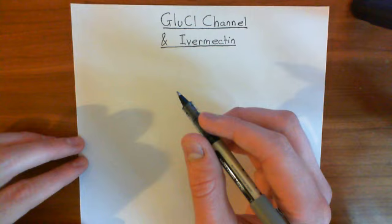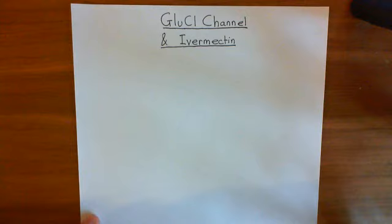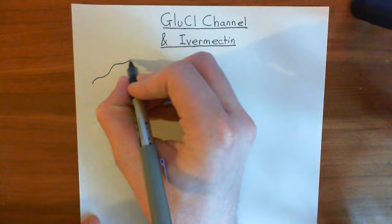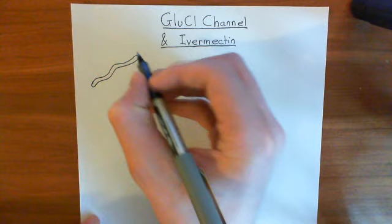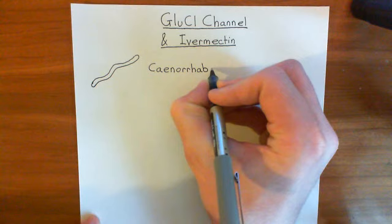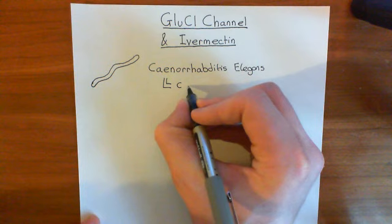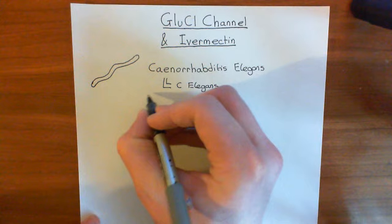The GluCL channel was initially found in a species of worm known as Caenorhabditis elegans — often abbreviated to C. elegans. These worms are a type of nematode, meaning they are a round worm as opposed to a flat worm.